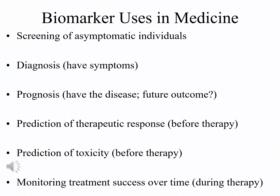How are we using biomarkers in medicine? Some of the applications include screening of asymptomatic individuals, as an aid to diagnosis — which means patients already have symptoms — in prognosis, which means we know patients have the disease but want to predict their future outcome, in predicting therapeutic response before therapy starts, and in predicting toxicity before giving therapy.